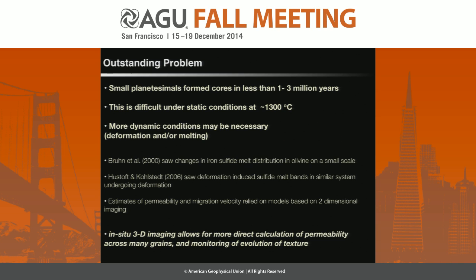There were some limitations on prior work. One is the Bruin et al. study, where they did high-resolution 3D imaging through serial sectioning but could only image a very small area — about one melt pocket or a few microns — so they couldn't get the bulk permeability of a large sample. In another study, the analysis was done on 2D sections of the sample, then using models based on 2D imaging to estimate a permeability. What we've done here, using in-situ 3D imaging, is image a large sample and more directly measure the permeability over a relatively large volume.